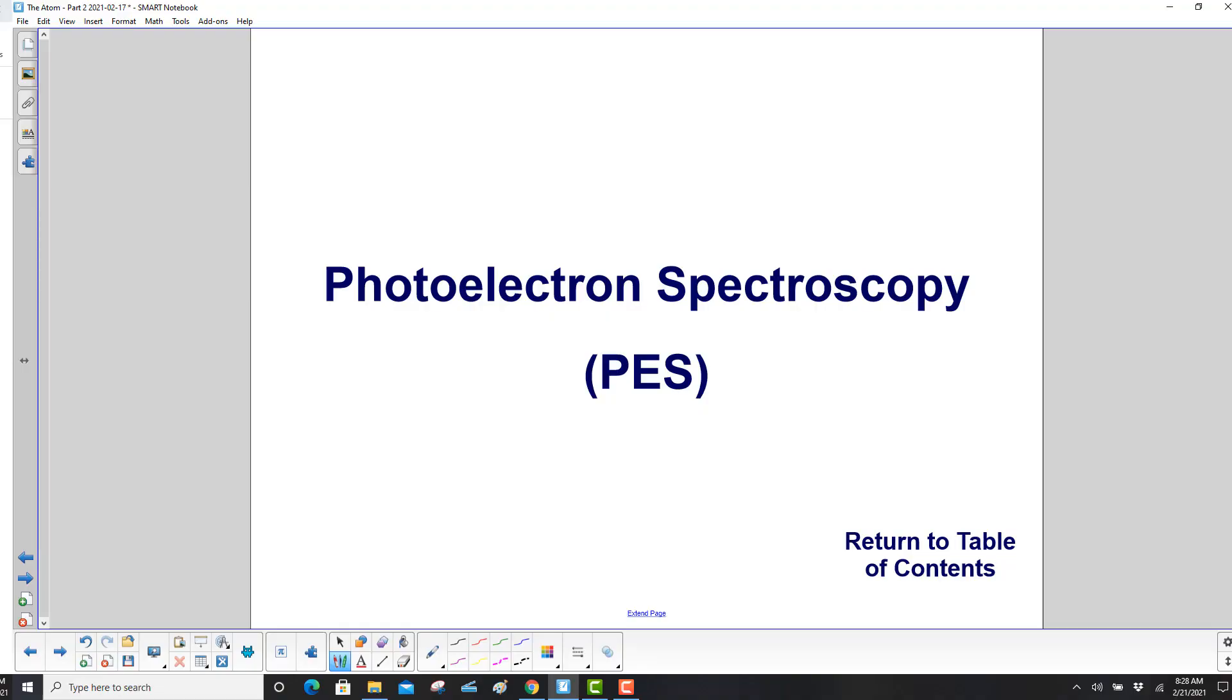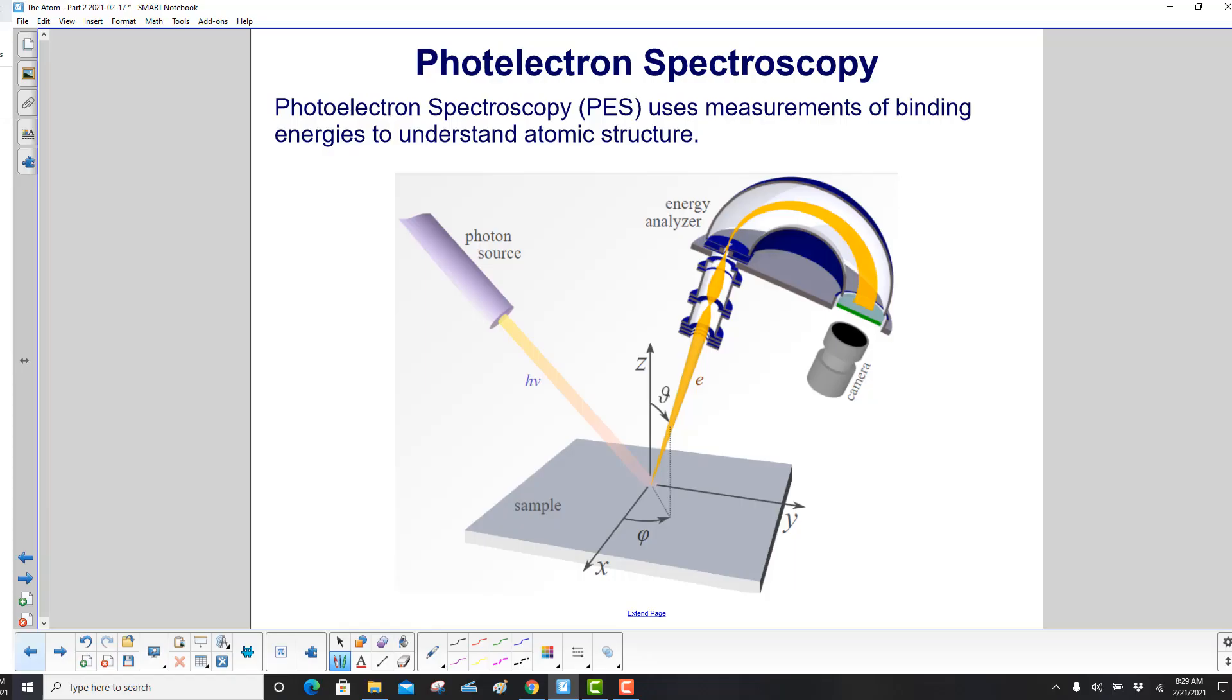Photoelectron spectroscopy, or abbreviated PES. Photoelectron spectroscopy uses measurements of binding energies to understand atomic structure.